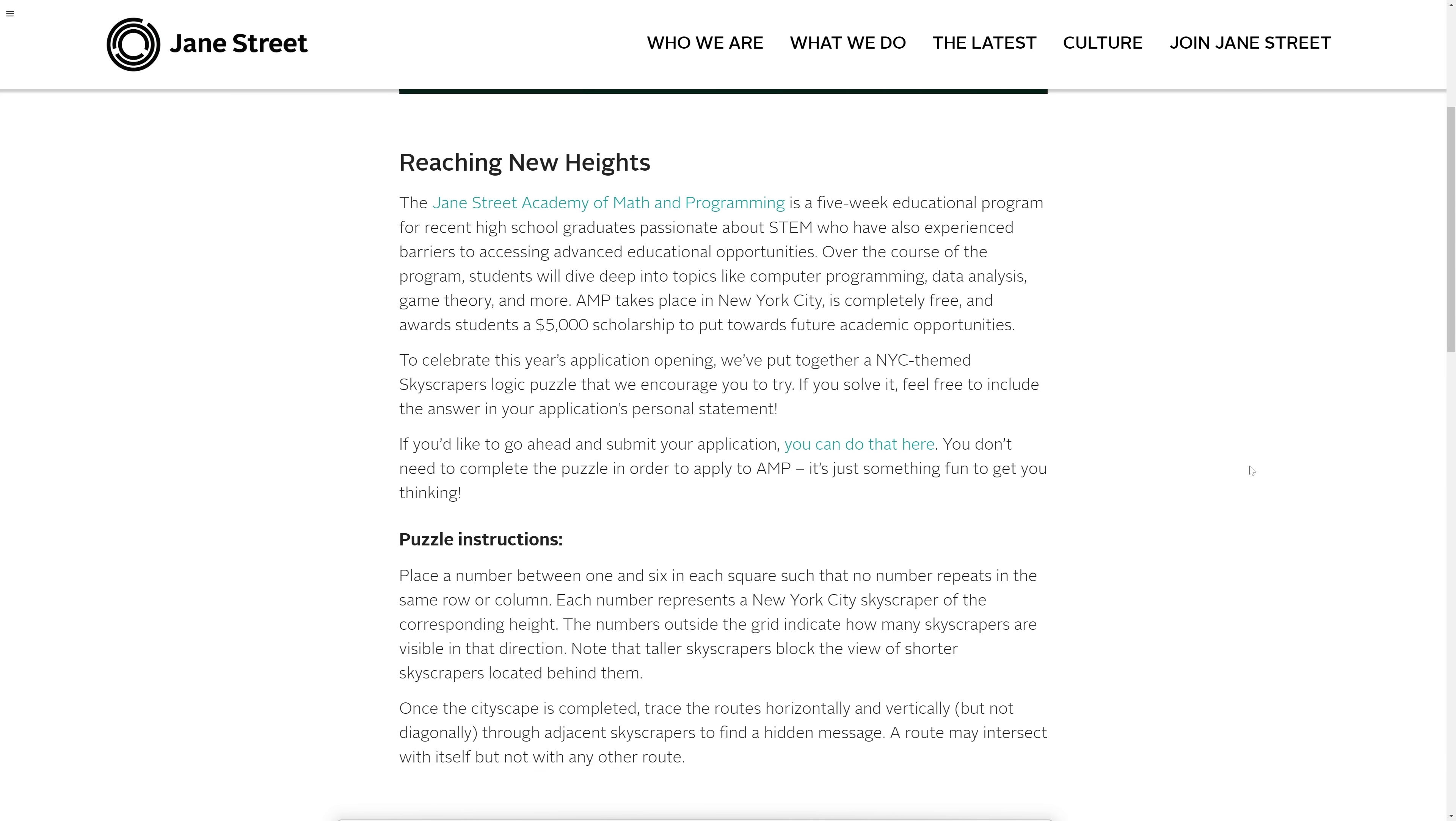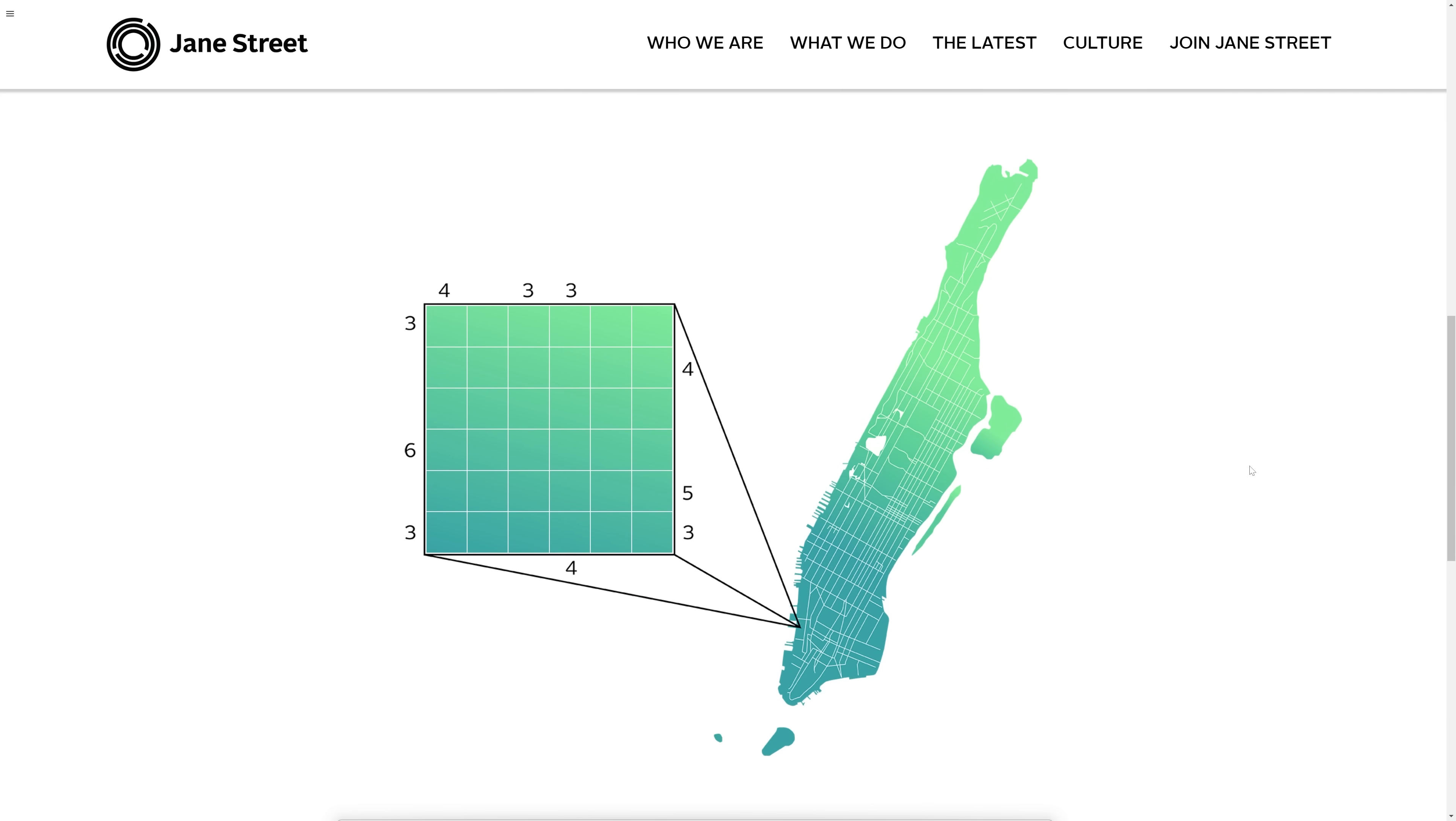To celebrate the opening of this year's application, Jane Street have put together a New York City themed logic puzzle to whet your appetite. If you do solve it, feel free to include the solution in your application. You don't need to solve the puzzle to apply, it's just a bit of fun. The puzzle is at the link in the description along with everything else you need to apply. Applications close on the 13th of March. So check out the app program today.